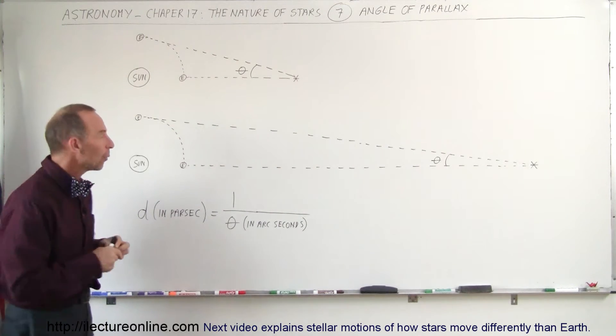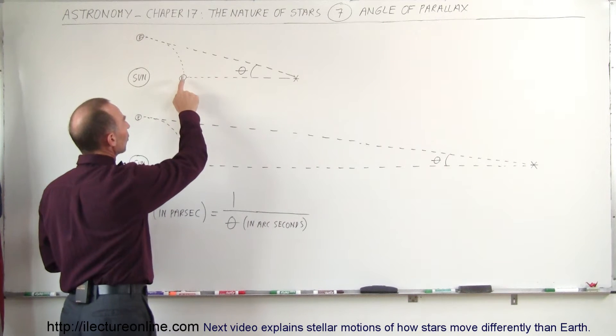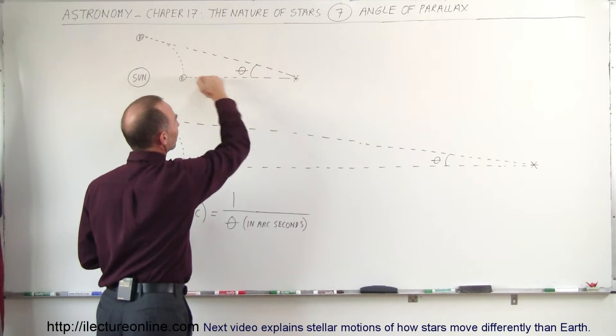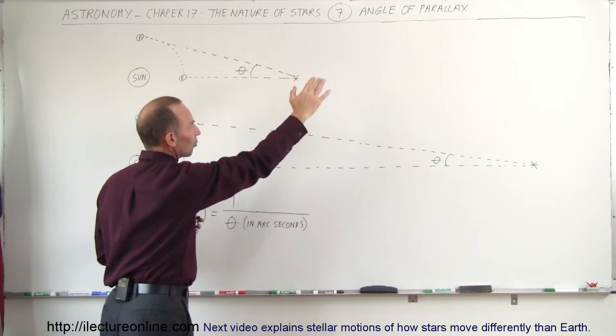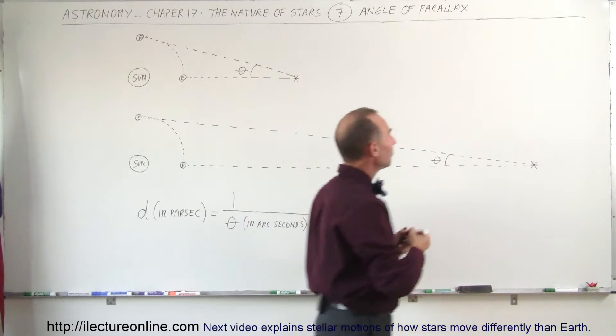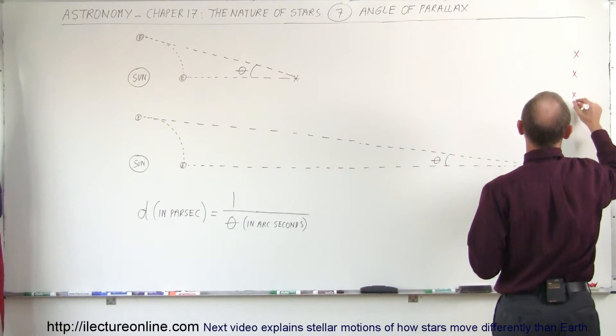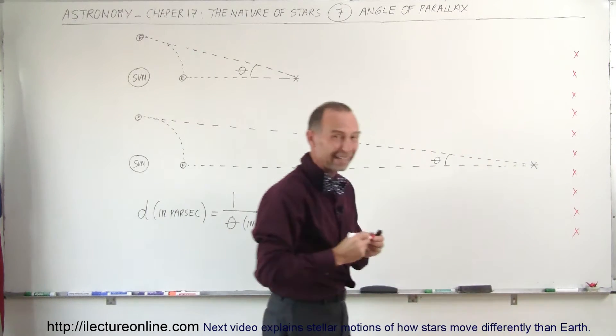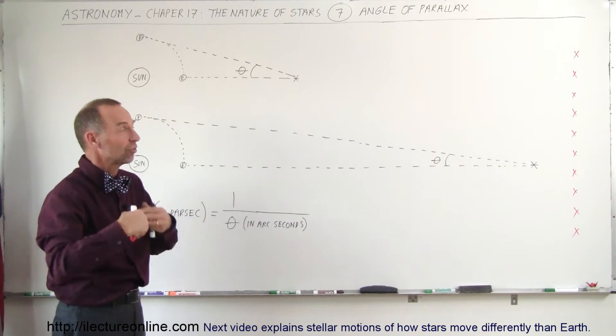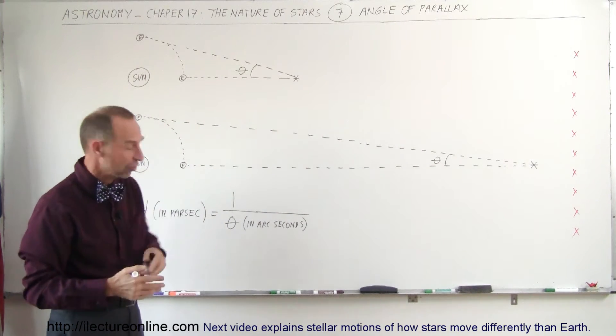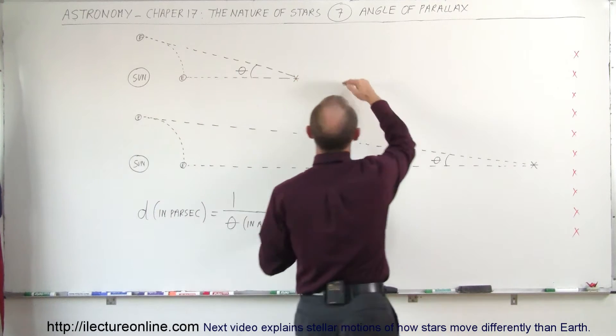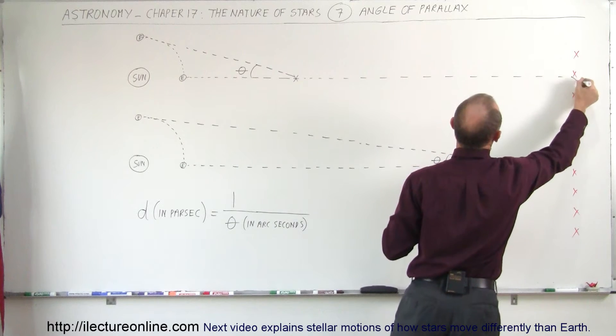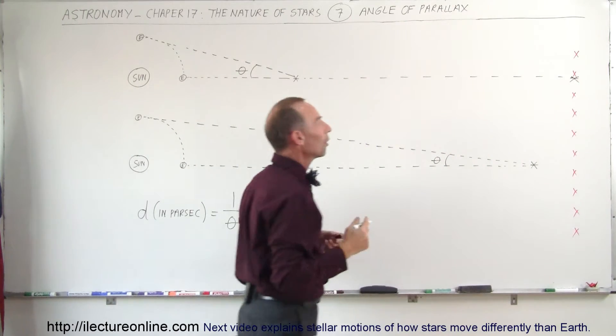It turns out that when we observe a star from the Earth, when the Earth is in this position in its orbit relative to the Sun and the star, we can draw a line directly from the Earth to the star and find its location relative to stars that are really, really far away from it. Let's say that these are the stars that are really far away and basically do not change position any time during the year because the movement of the Earth is insignificant compared to the enormous distances of those stars. Then that star would show up against the background of stars in a particular location, so the star would be over there at that point in the Earth's orbit.